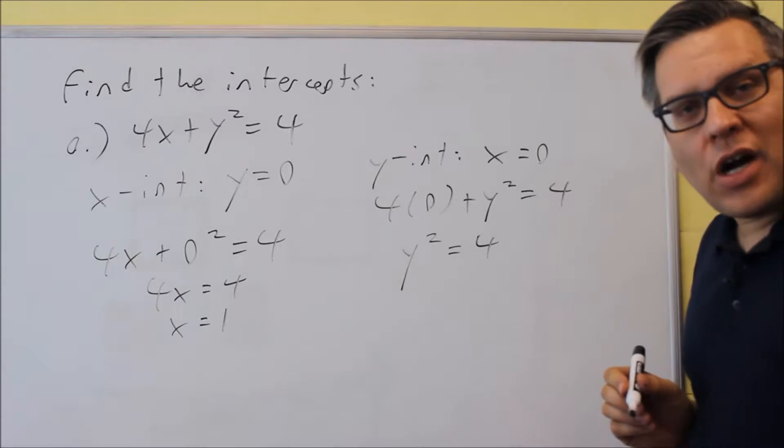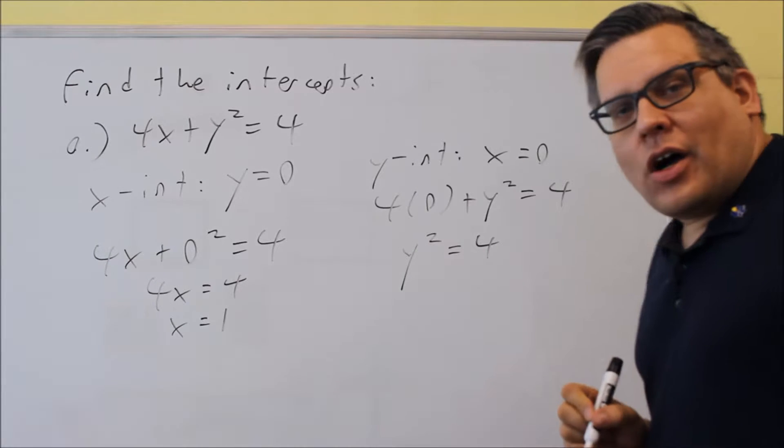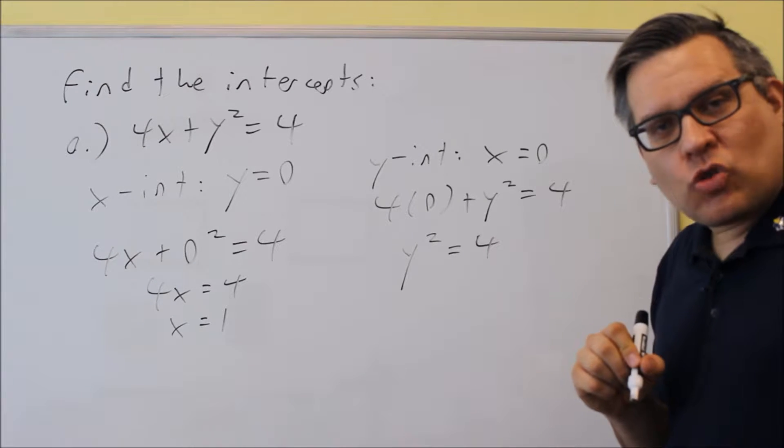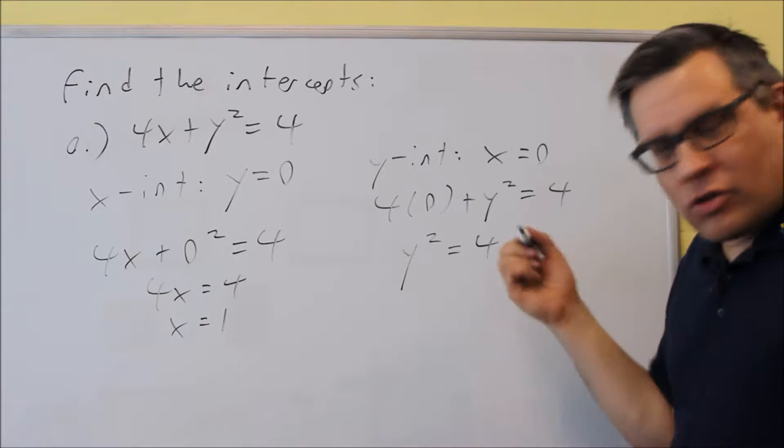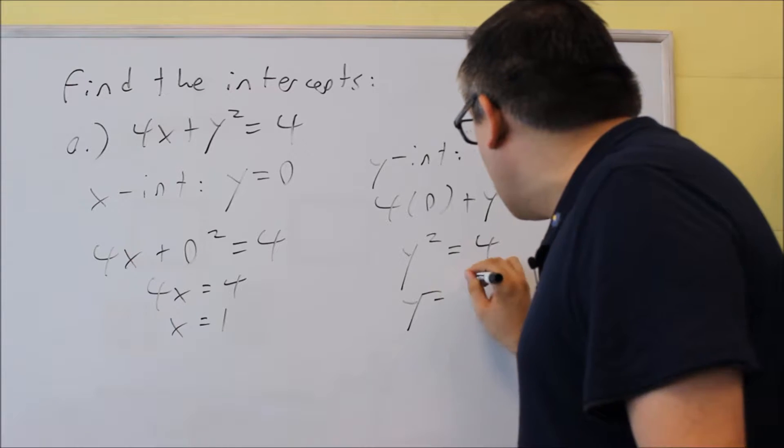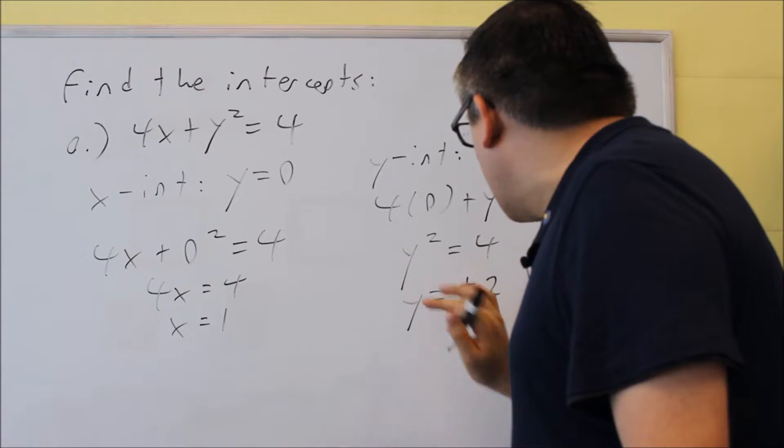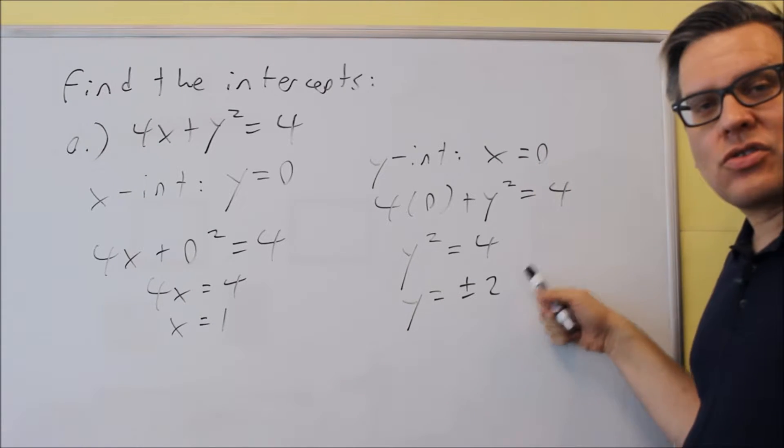you're going to get plus or minus because if you take negative 2 squared, you get 4. And 2 squared, you also get 4. So you get two answers. So y is going to equal plus or minus 2. So it crosses the y-axis in two places.